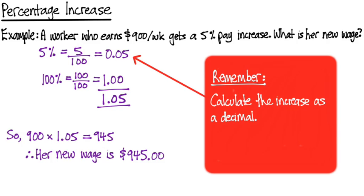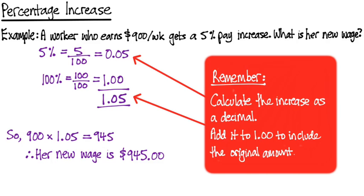So remember, calculate the increase as a decimal, add it to 1.00 as a decimal because that includes the original amount, and then you can calculate it. That's how we do percentage increases.